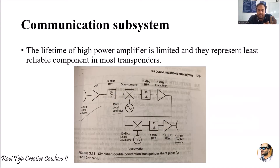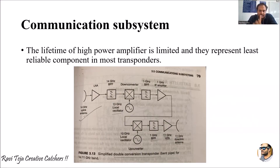Using a 10 gigahertz local oscillator, the signal is up-converted and given to a one gigahertz band pass filter. That filtered signal is passed through a high power amplifier which passes the required frequency band and is then given to the 11 gigahertz downlink antenna.